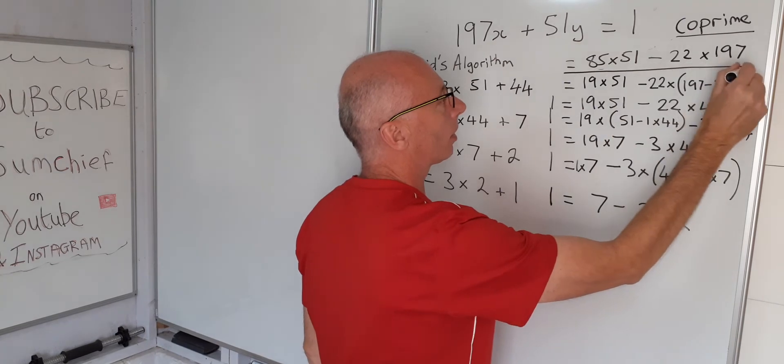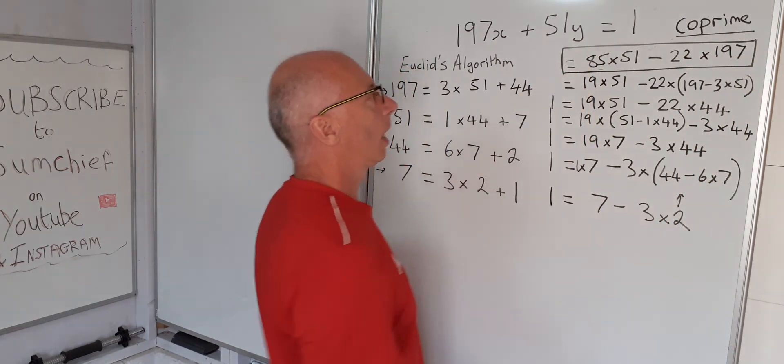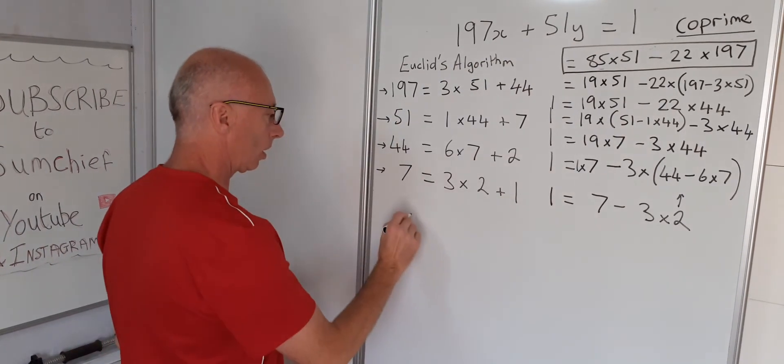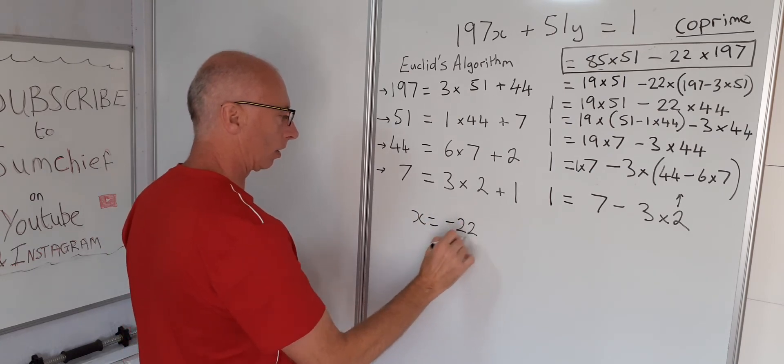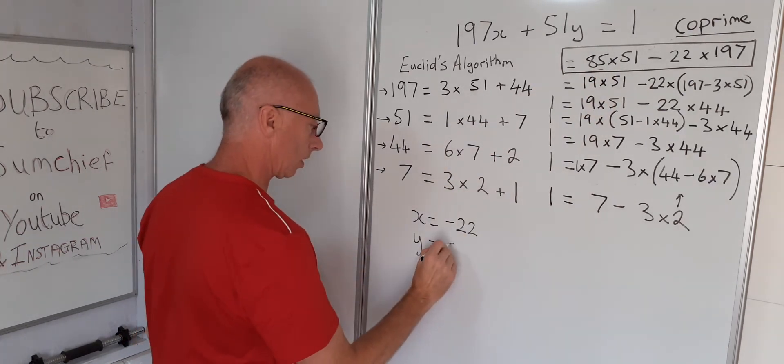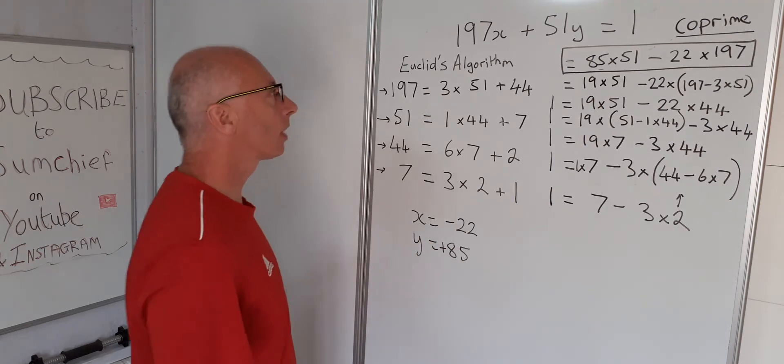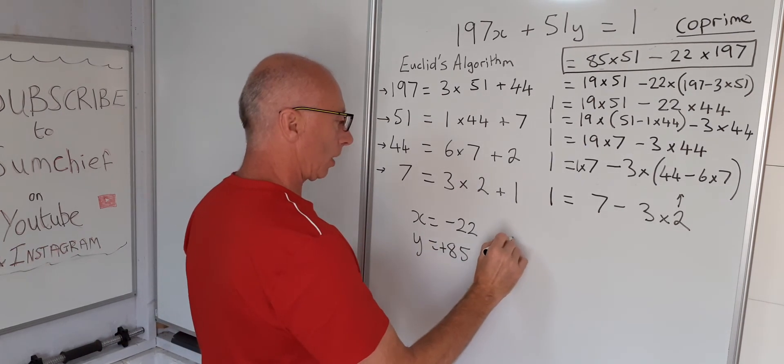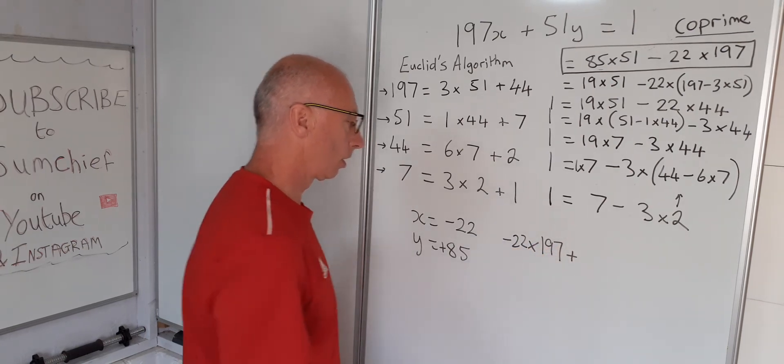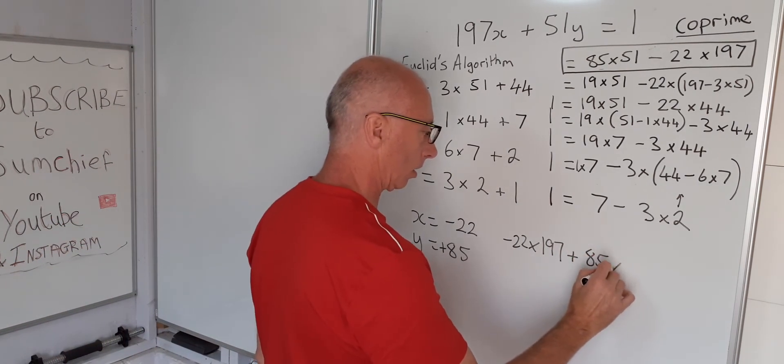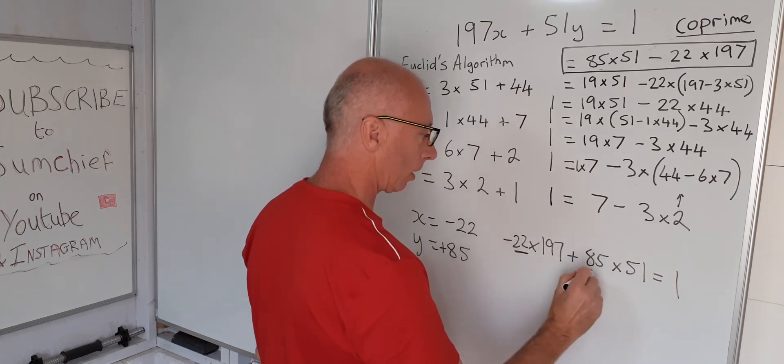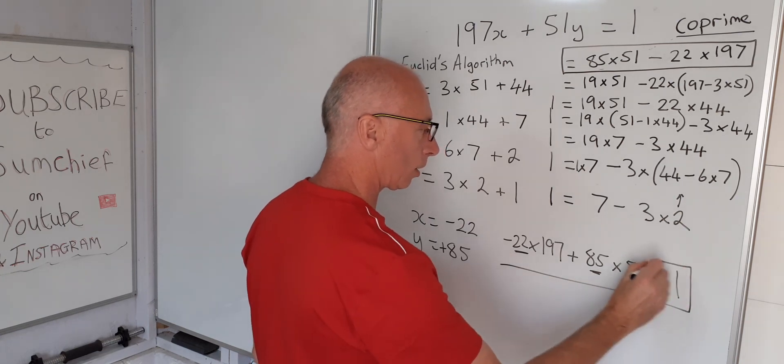Then we've come to the end of our calculations. And then plugging in the x and the y, we see that our x is minus 22, our y is 85. And that's a positive 85. So then we can say that minus 22 times 197 plus 85 times 51 will equal 1. So that's our numbers that we required for our x's and y's to make that statement true.